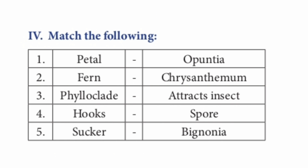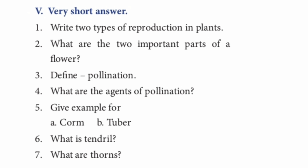Roman numeral IV: Match the following. Petal — attracts insects. Fern — spore. Phylloclade — Opuntia. Hooks — Bignonia. Sucker — Chrysanthemum.